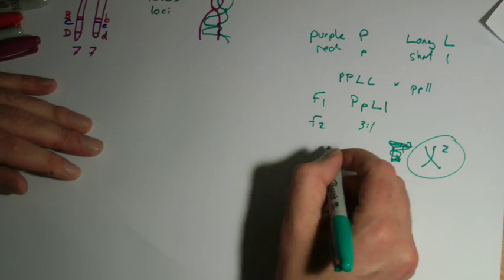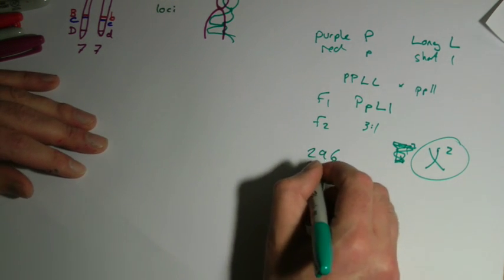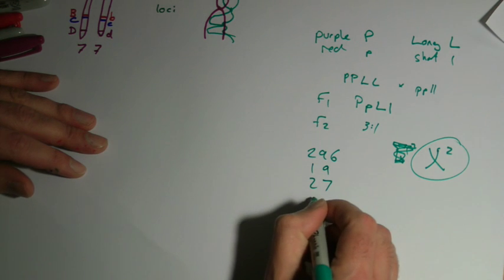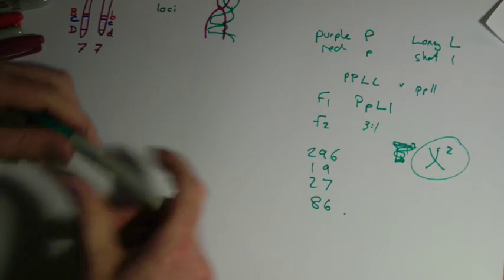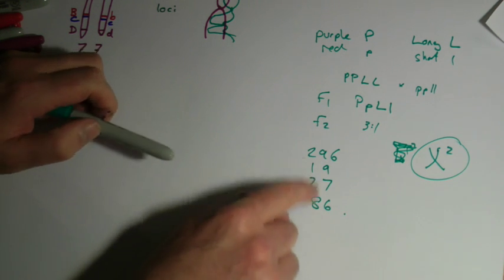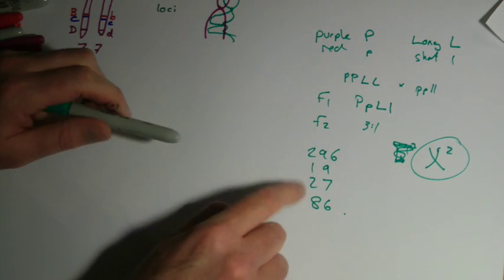So what they have is, their values are 296, 19, 27, and 86. So that's what they actually observed in the experiment. Observed results will often be slightly off.